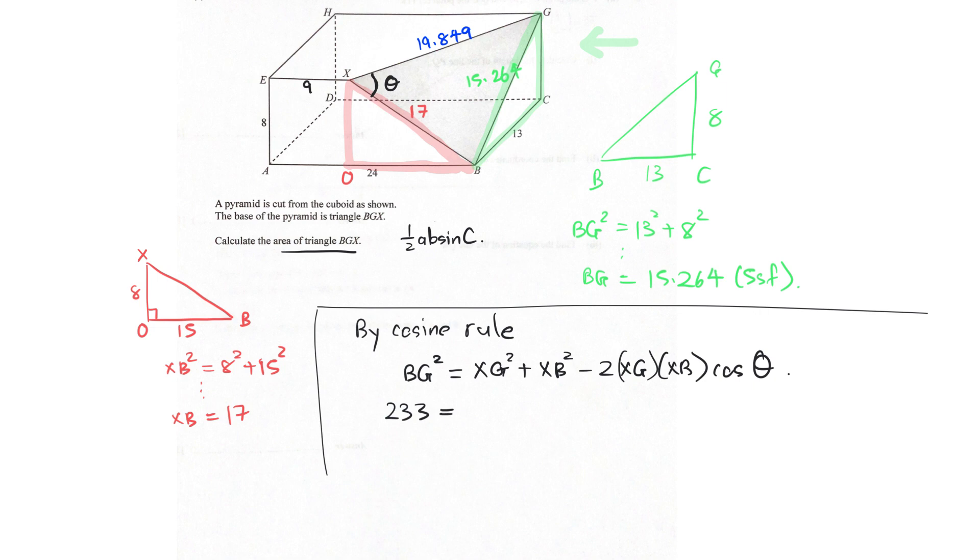289 minus 2 times of XG. 19.849. XB, 17. Cosine theta. Right, with a lot of algebraic manipulation, I'm going to have cosine theta to be approximately 0.67124 and theta will be 47.837 degrees.